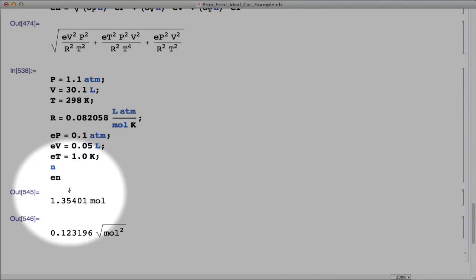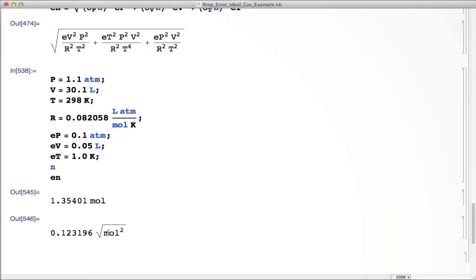So now I can calculate the number of moles, and I can calculate the error in the number of moles, which is 0.123, which is, if you continued on the handwritten calculation, that's what you should get. And then I don't know why Mathematica isn't simplifying this to the square root of the square of moles, it should be just the moles. So now you would write this as 1.35 plus or minus 0.12 moles. I hope that helped give you a concrete example, and I'll update this further with some more examples.